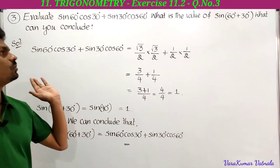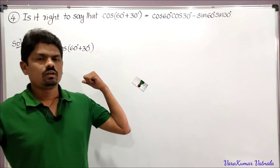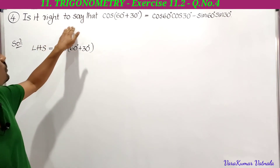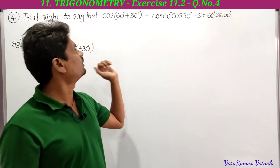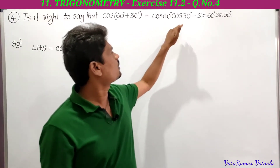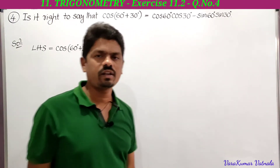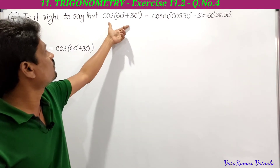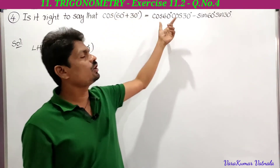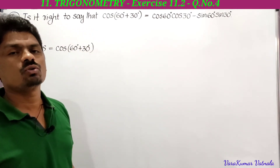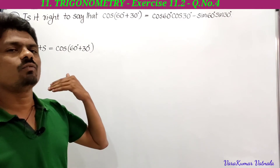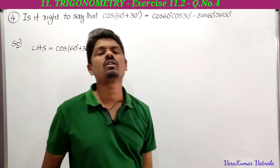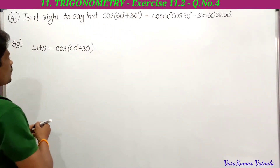Next, we have to solve the fourth problem from Exercise 11.2. It asks: is it right to say that cos of 60 degrees plus 30 degrees is equal to cos 60 cos 30 minus sin 60 sin 30? To check, we have to find the value of LHS and RHS. If LHS equals RHS, we say it is right; otherwise, it is not right.